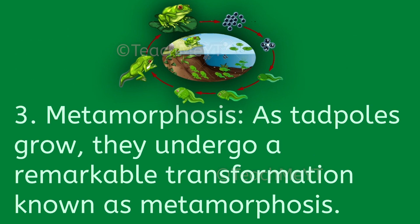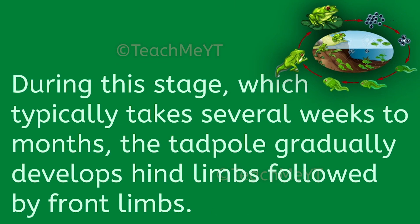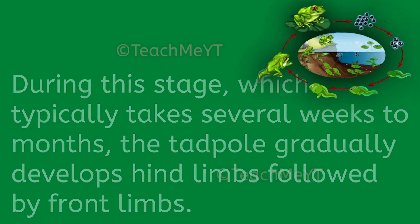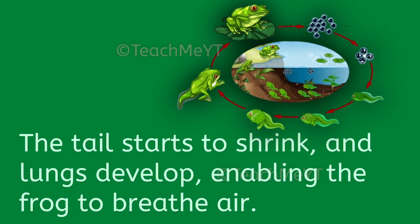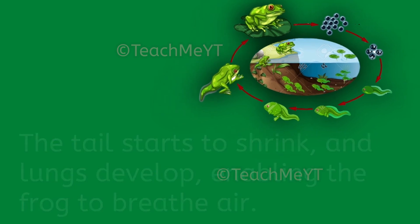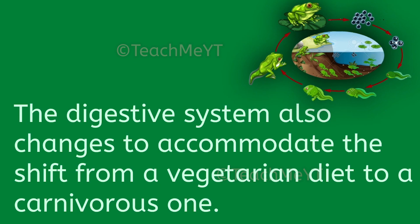Number 3: Metamorphosis. As tadpoles grow, they undergo a remarkable transformation known as metamorphosis. During this stage, which typically takes several weeks to months, the tadpole gradually develops hind limbs followed by front limbs. The tail starts to shrink and lungs develop, enabling the frog to breathe air. The digestive system also changes to accommodate the shift from a vegetarian diet to a carnivorous one.